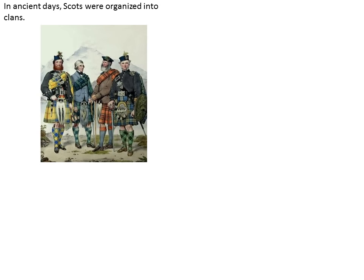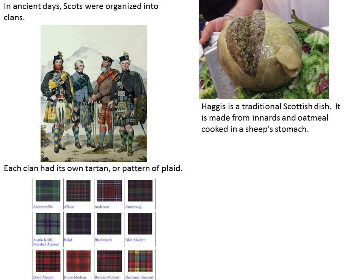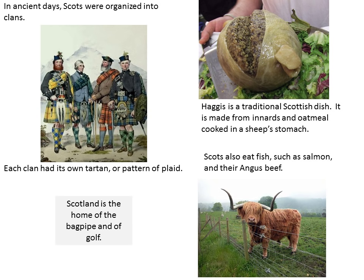In ancient days, the Scots were organized into clans. Each clan had its own tartan, or pattern of plaid. Haggis is a traditional Scottish dish — it's made from the innards and oatmeal, cooked in a sheep's stomach, although the sheep's stomach thing is on its way out. Scottish also eat fish, such as salmon, and their famous Angus beef. Scotland is the home of the bagpipe and of golf, although it's possible that neither one of them originated there.